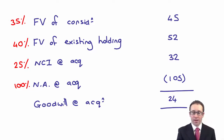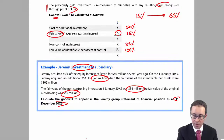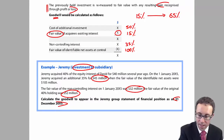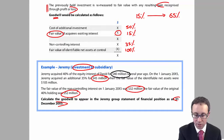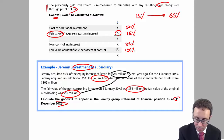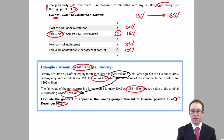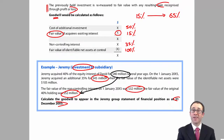So that is your goodwill at the date we crossed the accounting boundary — the date we gained greater than 50%. Exam questions will ask you to calculate the goodwill when you've gone from an investment up to a subsidiary.